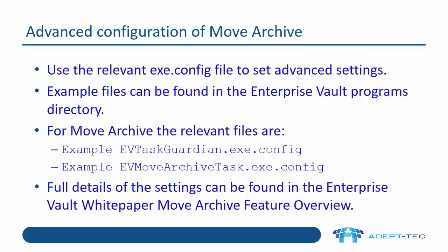There are a number of advanced configuration settings for move archive. We can use the relevant exe.config file to set advanced settings, and example files can be found in the Enterprise Vault programs directory. For move archive tasks, the relevant files are example evtaskguardian.exe.config and example evmovearchivetask.exe.config. Full details of the settings can be found in the Enterprise Vault white paper 'Move Archive Feature Overview'.